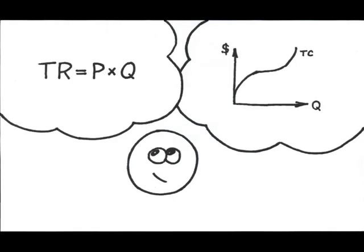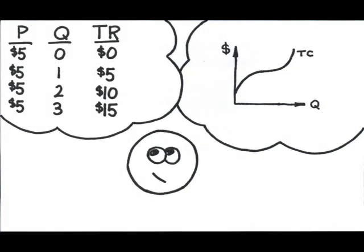And since price is always P-star, let me say for the moment that P-star is $5. If that's true, then for output equals 0, revenue equals 0. But if output equals 1, revenue is $5.